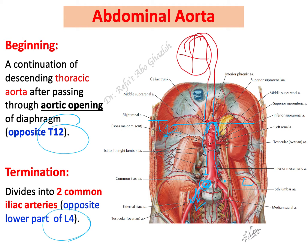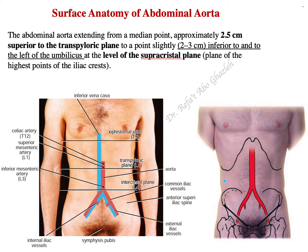Now let us shift to the surface anatomy. The posterior abdominal wall is deep, so now we move to the surface anatomy to identify the location of the abdominal aorta at the surface of the abdomen.